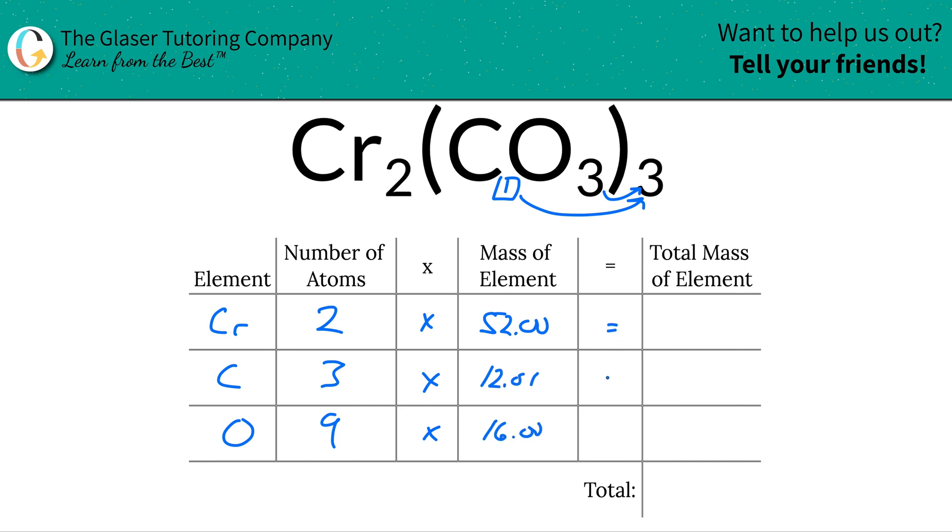To find the total mass of the element in the compound, you simply have to multiply this row across. So for chromium, this is simply going to be 104. For carbon, that's going to work out to be 36.03. And then for oxygen, it's just a simple 144. To then find the total mass, all you got to do now is just add it all together.